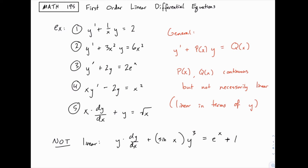Down at the bottom I have an example of one that's not linear, just to point out the differences. The fact that dy/dx is multiplied by y — that messes with the linear structure. The fact that there's a y cubed also messes with the linear structure. The sine of x and the e to the x plus 1 are fine — those can be non-linear functions because they're functions of x and would fit the form of p of x and q of x.